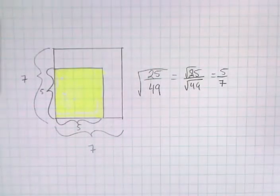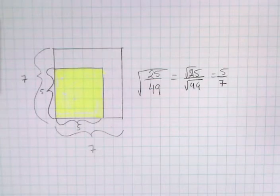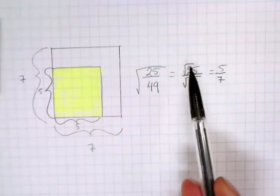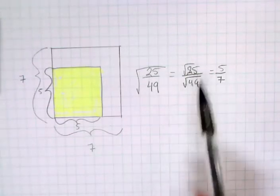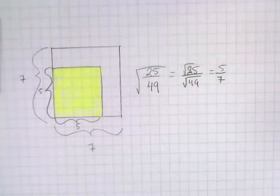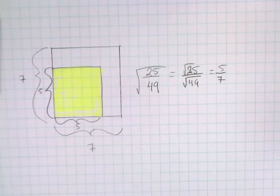So if we're ever square rooting a fraction, what we want to do is square root both the numerator and square root the denominator. First check if the numerator and denominator are perfect squares. And if they are perfect squares, then my fraction is a perfect square.